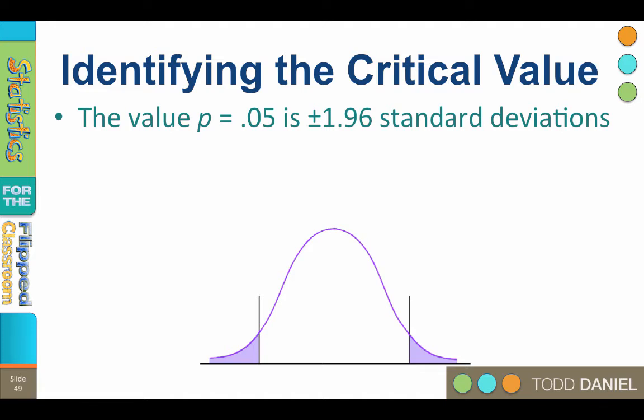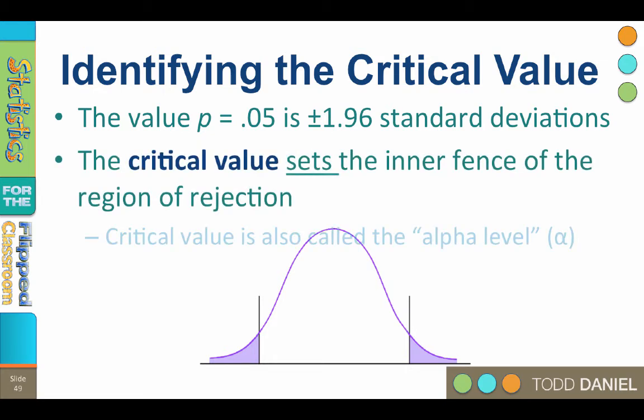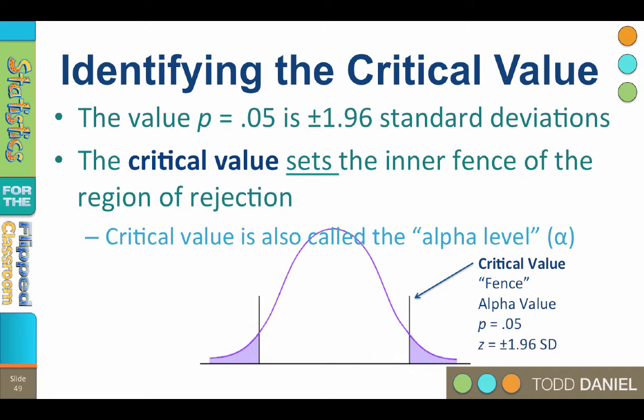If you want to exclude p equals 0.05 of your scores, you can set a critical value to mark a region of rejection. The critical value is the 5% cutoff value that sets the inner fence of the region of rejection. The criterion we use is 5%, p equals 0.05, although we could use other values if we wanted to.